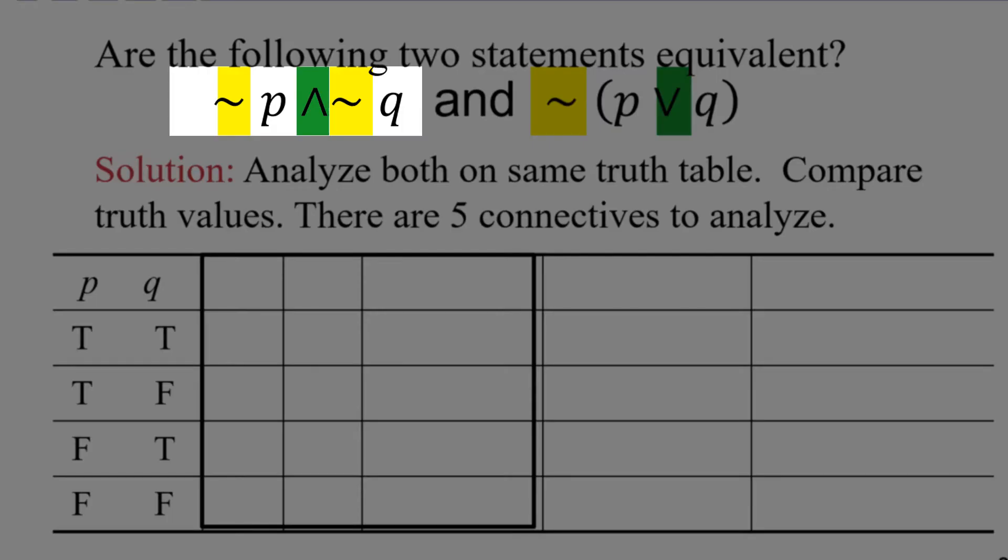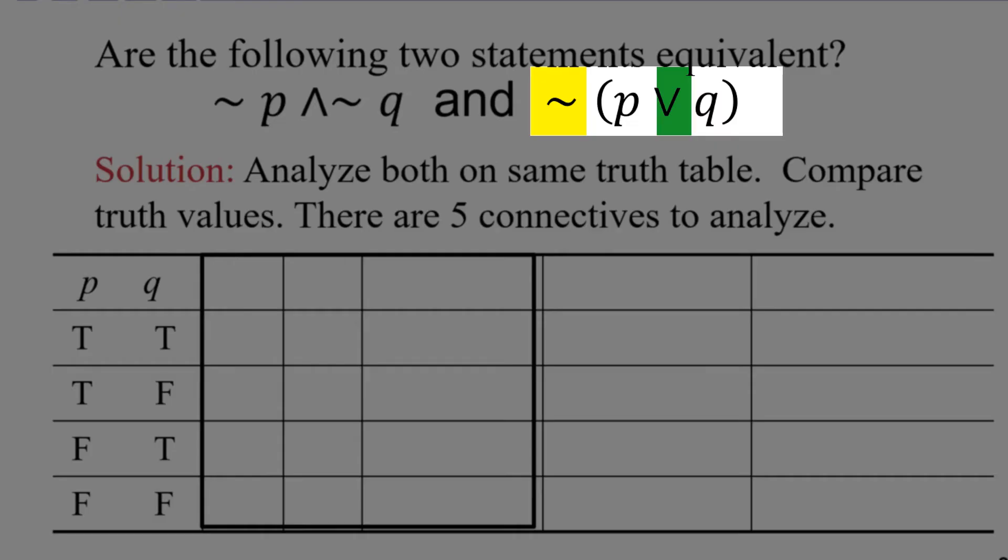So how would we determine if these two statements are equivalent? Well, we would need to set up truth tables to determine those values. I have set up a truth table. I'm actually going to combine the truth values from both of these into one table — it's going to require five columns because altogether there are five connectives to analyze. In the statement on the left, we have two negations and an and. In the statement on the right, we have a negation and an or.